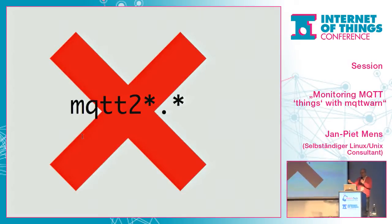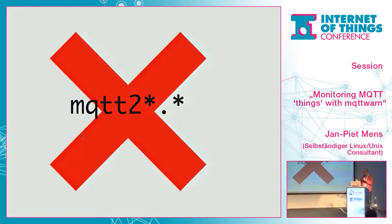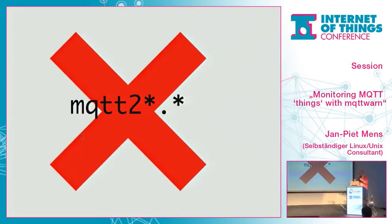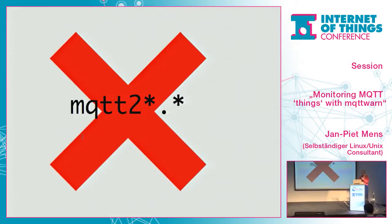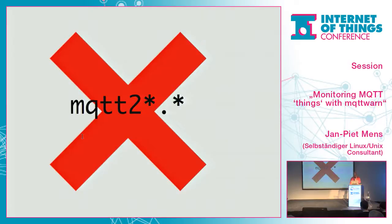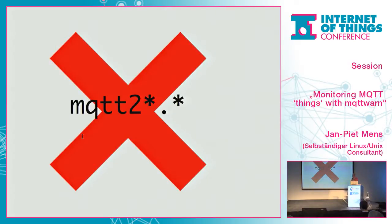They're all basically the same. You have a little program which subscribes to an MQTT topic branch, or a couple of topic branches, extracts some data, and publishes this to a service. And we then thought, well, why don't we try and do this properly? And that's what MQTT Warn has become.